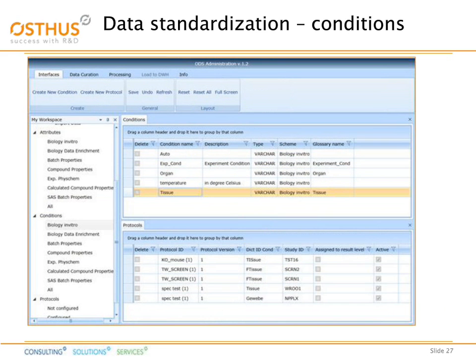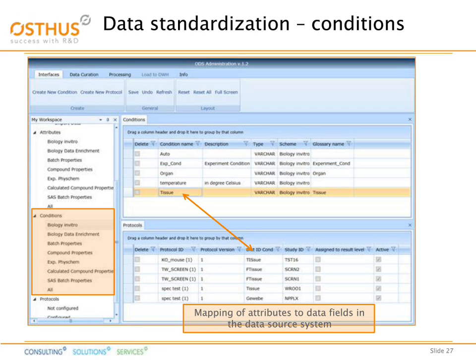Now we are looking at the conditions. We have here a similar mapping as we did before. Conditions are grouped in domain-specific boxes, and we can perform a mapping between conditions within the source systems and the data warehouse. Optionally, these conditions can be linked to a glossary.